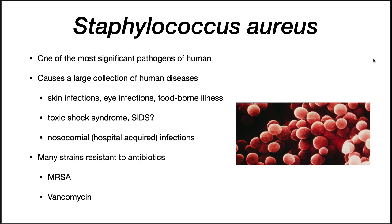Staphylococcus aureus is one of the most significant pathogens of humans. It causes an extensive array of human diseases including skin infections, eye infections, foodborne illness, toxic shock syndrome, and it may have a role in sudden infant death syndrome. It is of great concern in nosocomial or hospital-acquired infections.